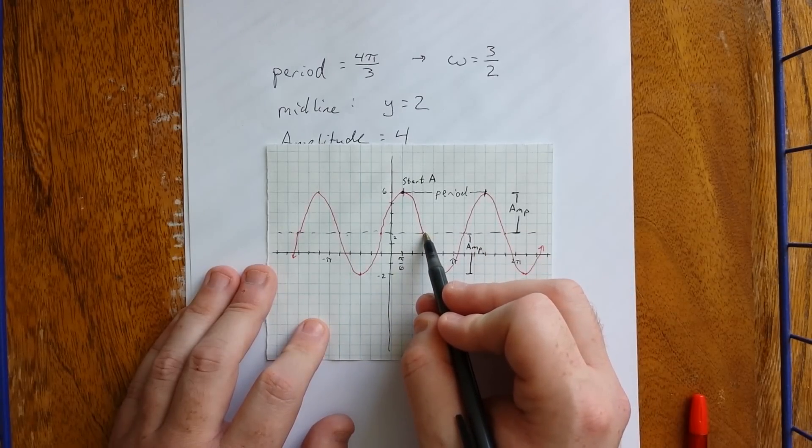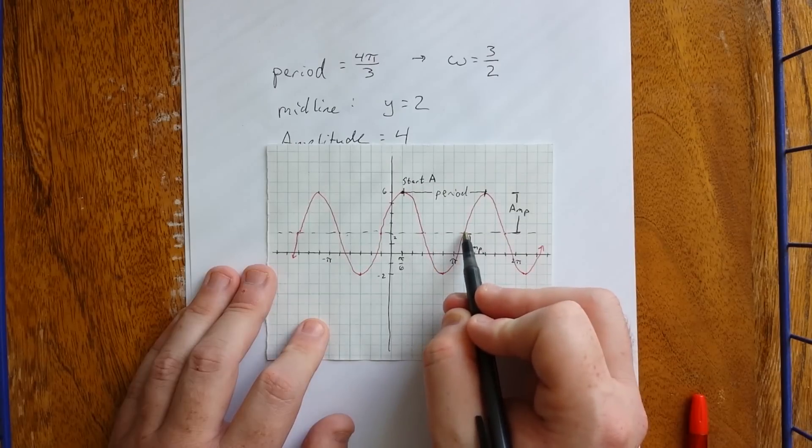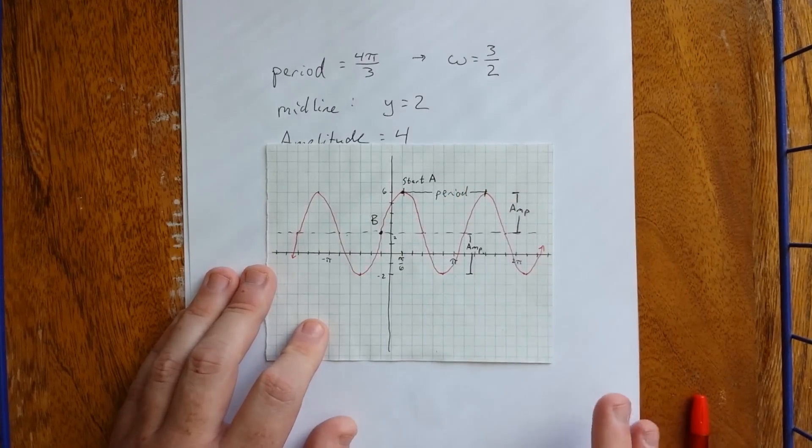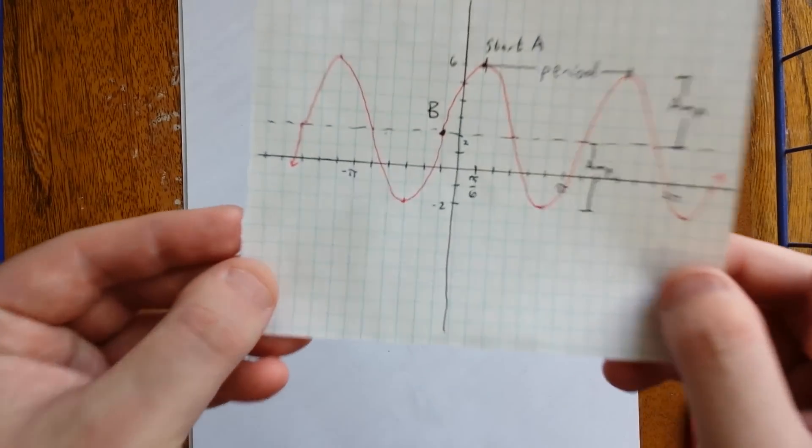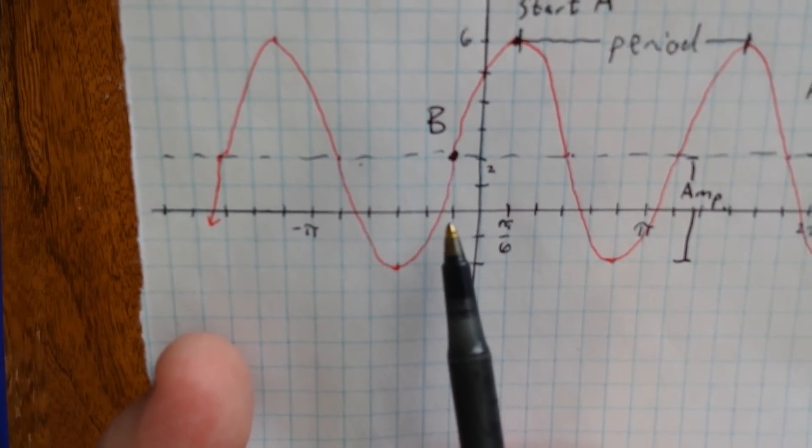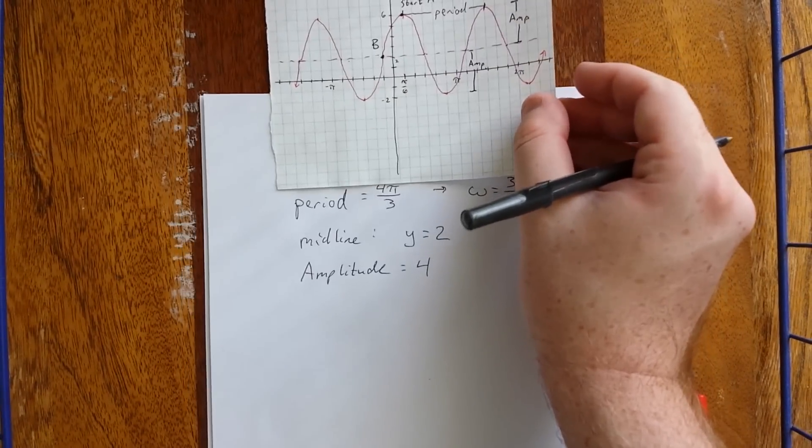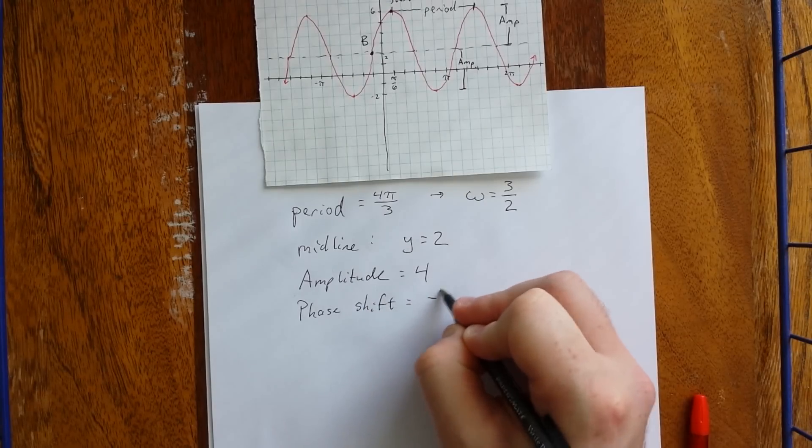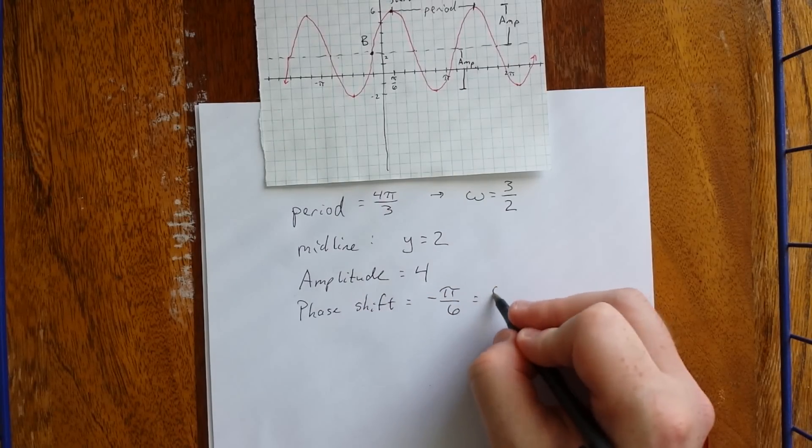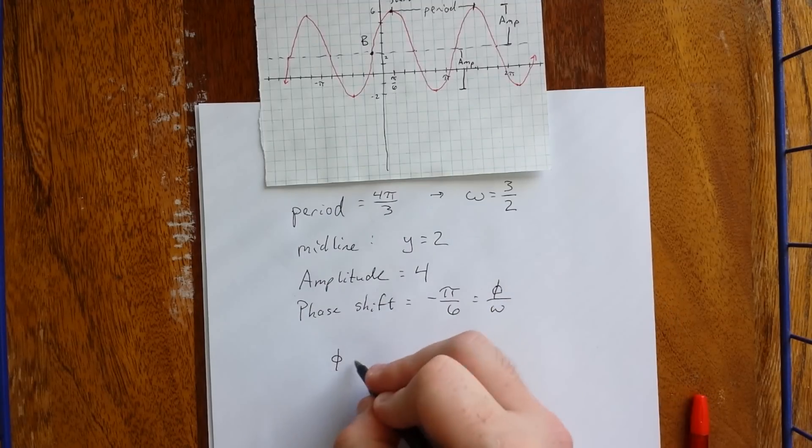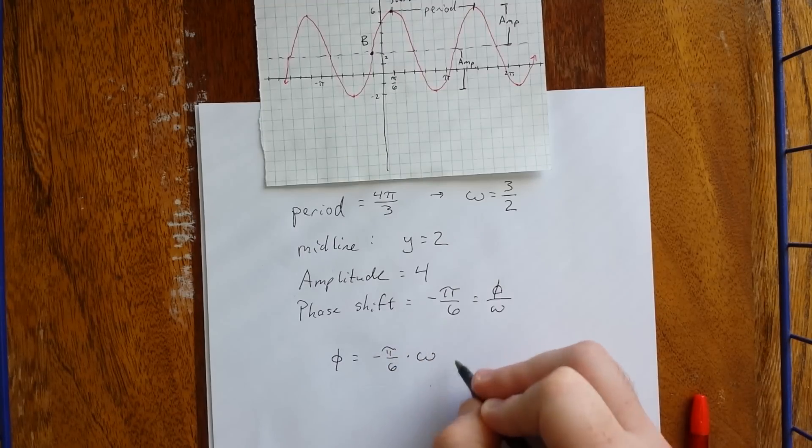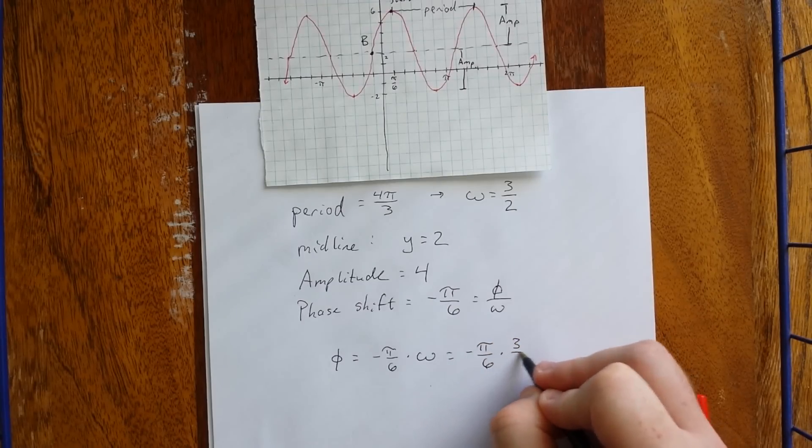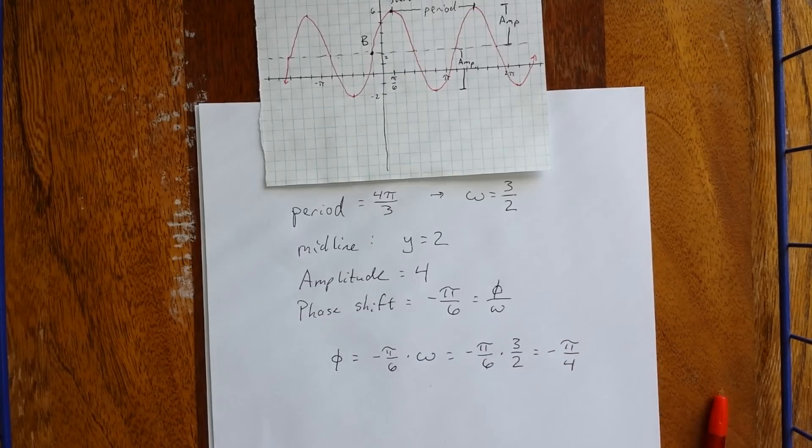We could also select this value for a starting point and use a negative value for A since it's decreasing through this point. Or we could select this point and use a regular old sine graph. The choice is completely up to you. So, we're going to use this as starting point B. And if we zoom in, we see that this starting point is at one tick mark on the negative side. That would be negative pi over 6. So, our phase shift for this one will be equal to negative pi over 6. Once again, the phase shift is equal to phi over omega. Solving once again, we'll get that phi is equal to negative pi over 6 times omega, which will be negative pi over 6 times 3 halves, which is equal to, if we simplify, negative pi over 4.